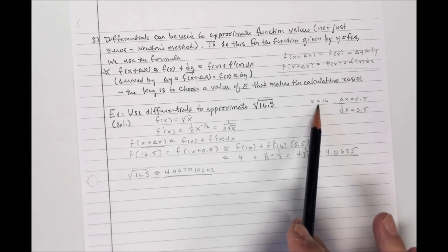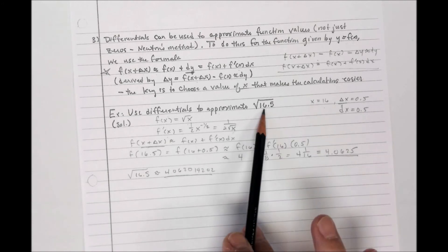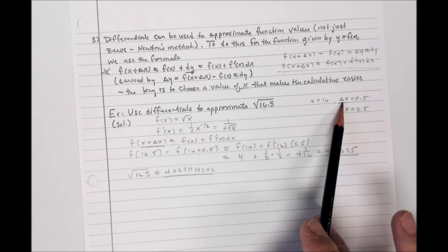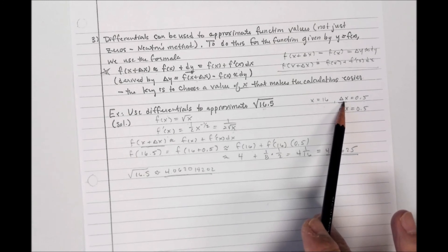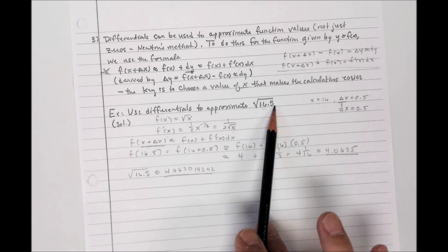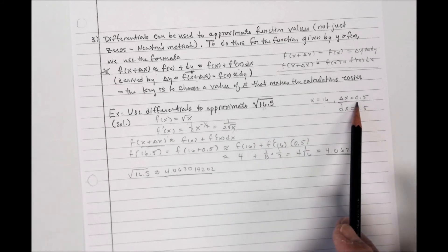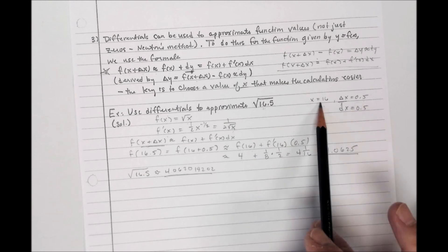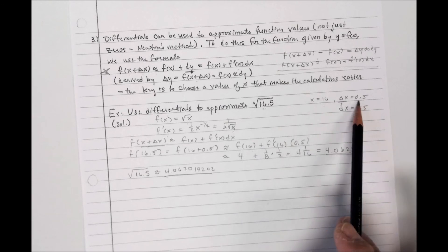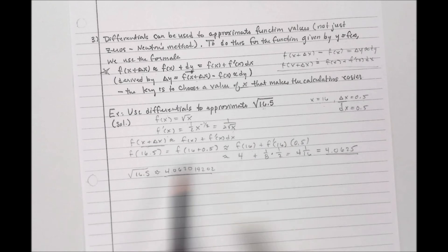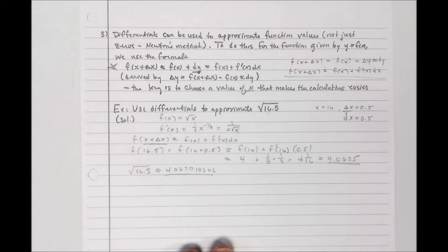If we had used X = 9 instead, delta X would be much larger, which gives a worse approximation — we want delta X to be a small number. If we needed the square root of 15.5 instead, we'd keep X = 16 and use delta X = −0.5 and still get a good result. Practice these problems; approximation using differentials has appeared on the AP exam before.